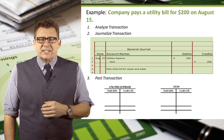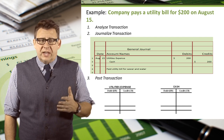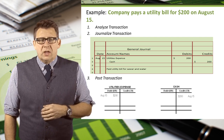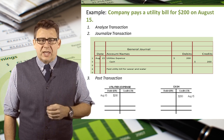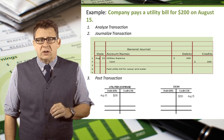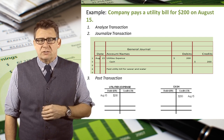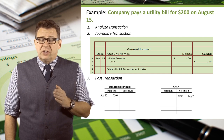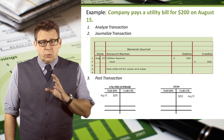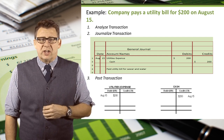In this final example, a company pays a utility bill for $200. The date is August 15th. Utilities expense is the debit account and the amount is $200, so we post $200 and the date to the debit side of the utilities expense account. Cash is the credit account and the amount is $200, so we post $200 and the date to the credit side of the cash account.